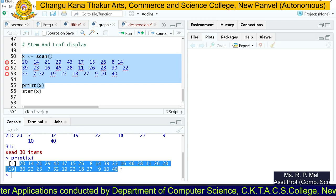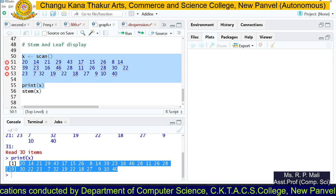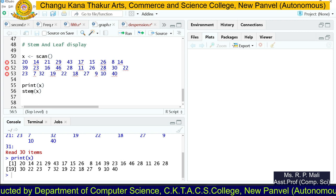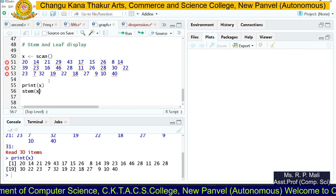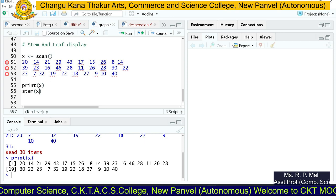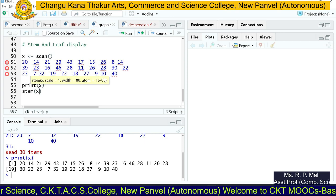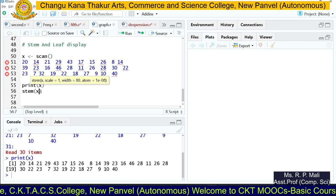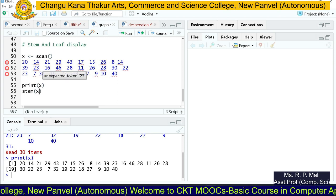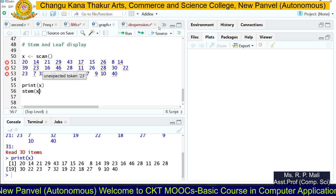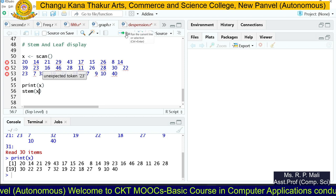R provides a built-in function called stem to plot the stem-and-leaf plot. I'm going to execute the next line. For the stem function, we pass the x variable in which we stored the values, and we want to find the stem-and-leaf plot. I'm going to execute this code.